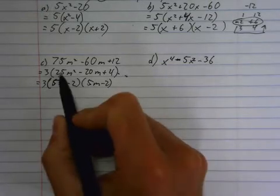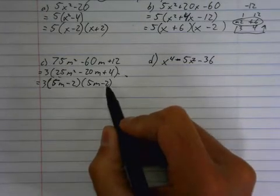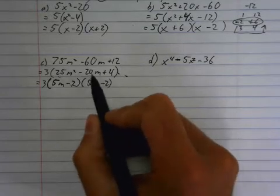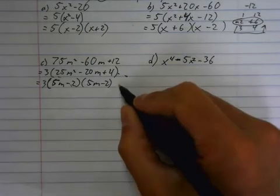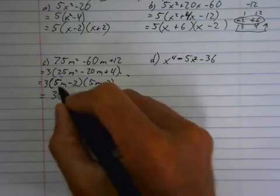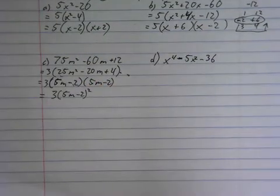So 5 times 5 is... There's your 25. 5 times negative 2 is negative 10. And then here's another negative 10. That's where negative 20 is coming from. And then negative 2 times negative 2 is positive 4. So check. We're good. But because these are the same bracket, that is it in fully factored form.